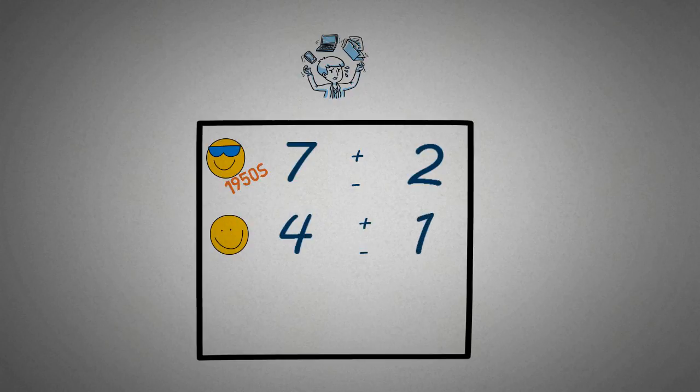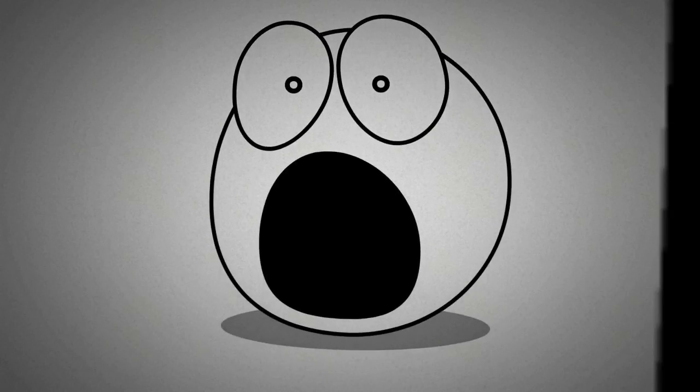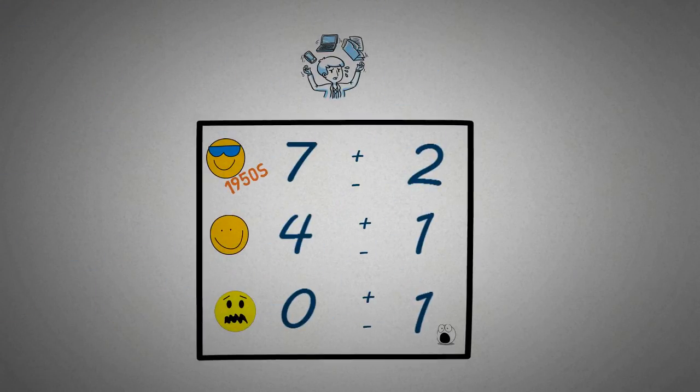But when you get stressed, your working memory shrinks. And when you get really stressed, I believe, or have this hypothesis, that you become a binary unit. You either do nothing or you do something. The nothing is the typical rabbit in the headlights, while the something is the fixation error, which we usually see in examples like the Elaine Bromley effect.